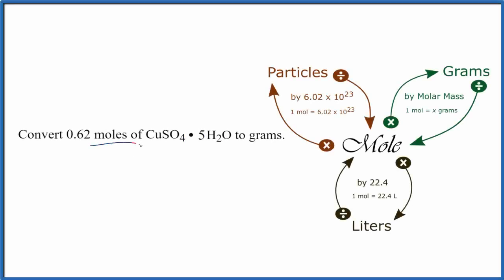In this video, we'll convert moles of copper 2 sulfate pentahydrate to grams. So we have 0.62 moles of copper 2 sulfate pentahydrate. This is just a number I made up for the problem. And we want to convert that to grams.